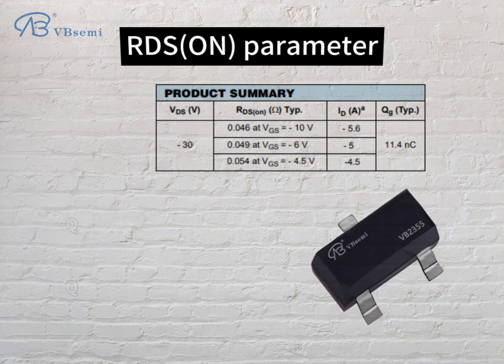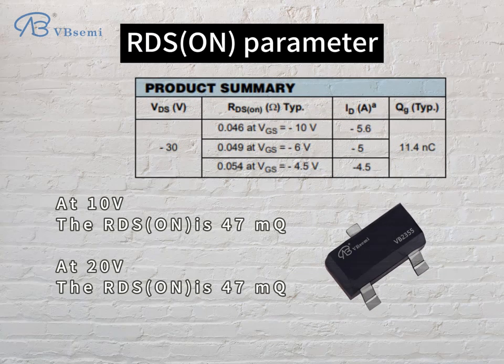RDS(on) parameter: at 10V, the RDS(on) is 47mΩ; at 20V, the RDS(on) is 47mΩ.